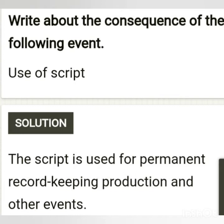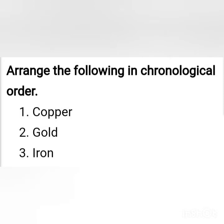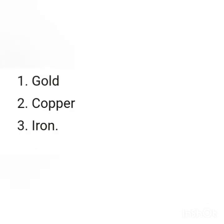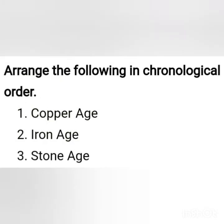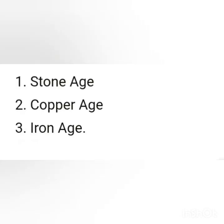The second question is: arrange the following in chronological order. First: copper, gold, iron — the answer is gold, then copper, then iron. Second: copper age, iron age, stone age — in chronological order the answer is stone age first, copper age second, and iron age third.